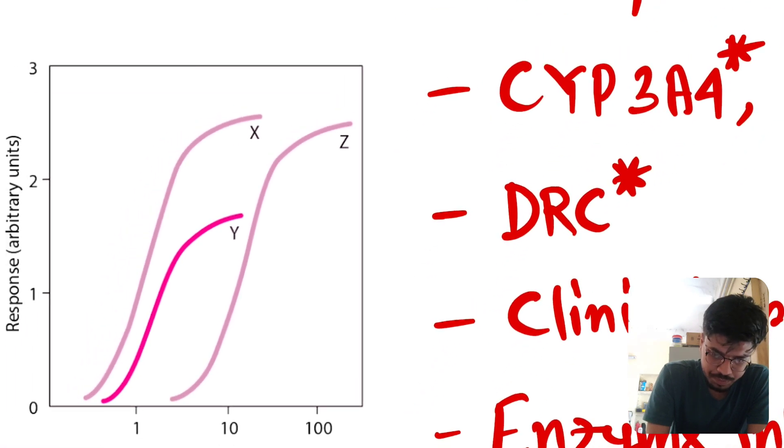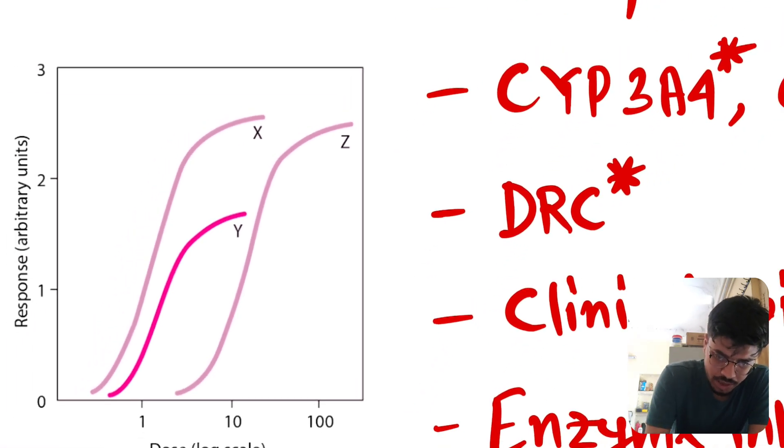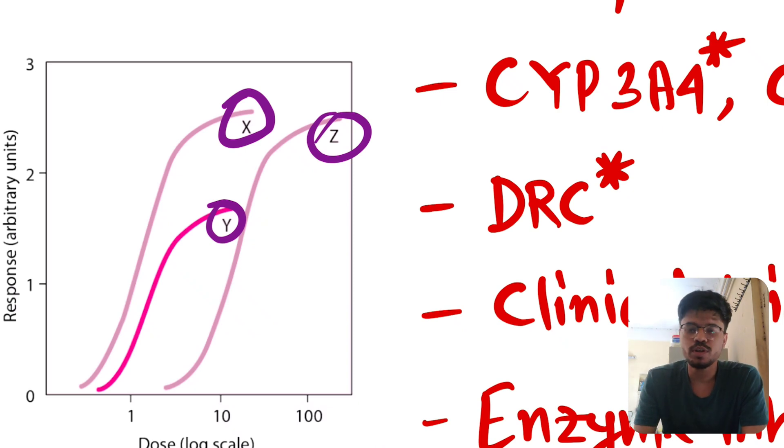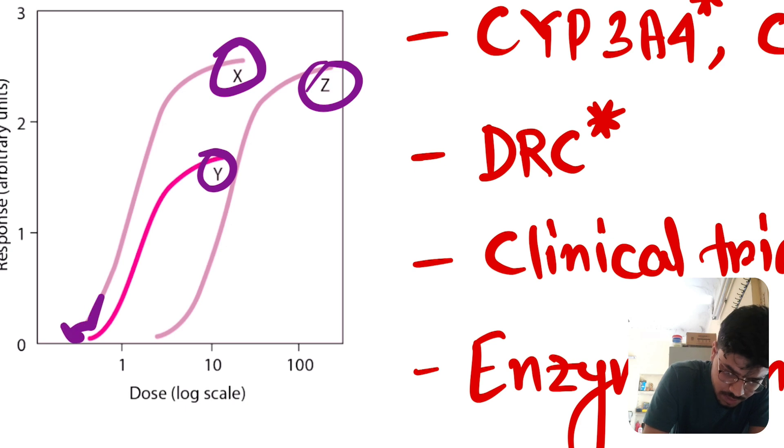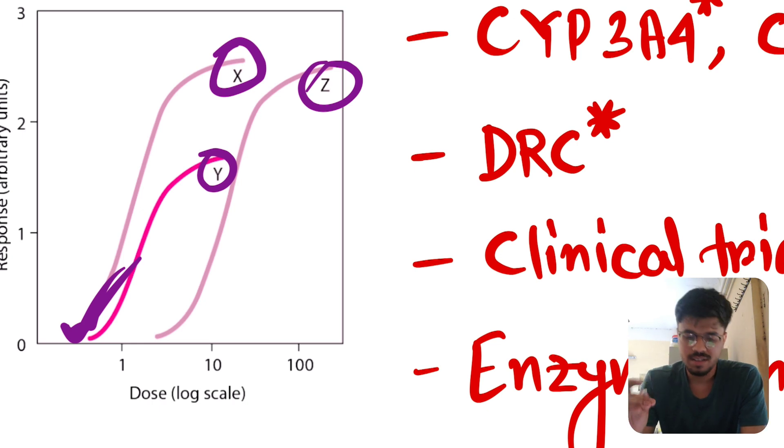Here, this is the graph. This graph is X, this graph is Y, and this graph is Z. Among these three graphs, which is more potent and which is more efficient? Remember, jo pehle ho, more potent. P for pehle, B for potent. Pehle konsa graph? X. So X is more potent. Now, more the height, more efficient. Konsa graph ka height zyada hai? X. So X is more potent, more efficient.